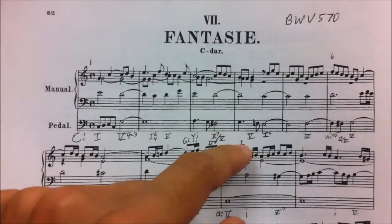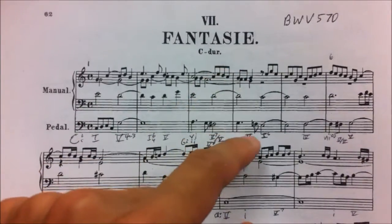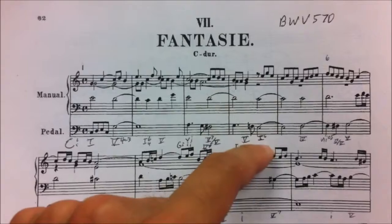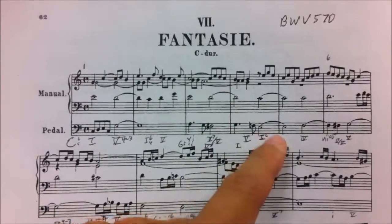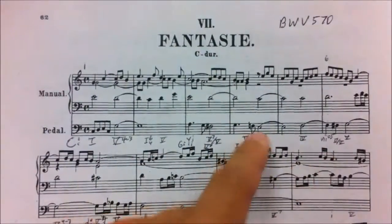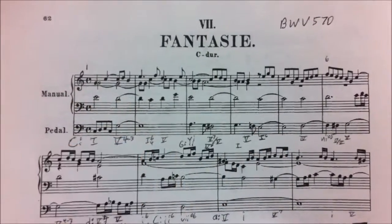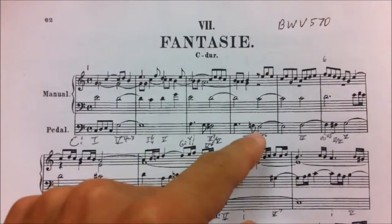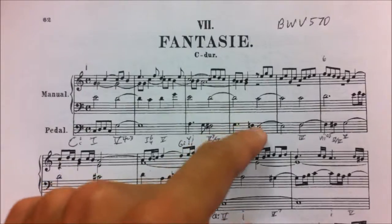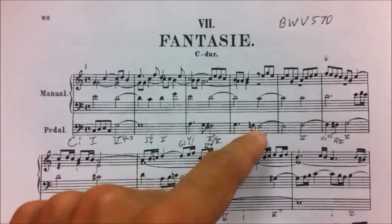He leaves G major by going from a G major triad to a C major triad in first inversion, which is 5-1 in C major. This is actually very sneaky, and you know we're going back to C major because there's an F natural here.